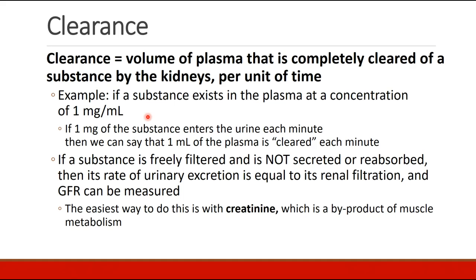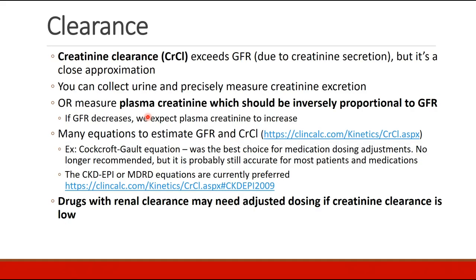The easiest way to measure GFR is with creatinine, a byproduct of muscle metabolism. Creatinine clearance is not a perfect substitute for GFR because there is a small amount of secretion of creatinine into the renal tubules, but it is a good approximation. You can collect urine and measure urine creatinine for a precise measurement of creatinine clearance and therefore GFR, or you can measure plasma creatinine, which has an inverse relationship to GFR — if GFR decreases, plasma creatinine is expected to build up and increase.